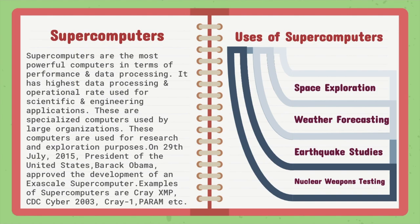Supercomputers have the highest data processing and operational rate, used for scientific and engineering applications. These are specialized computers used by large organizations for research and exploration purposes. On 29th July 2015, President of the United States Barack Obama approved the development of an exascale supercomputer. Examples include Cray XMP, CDC Cyber 2003, Cray 1, and PARAM. Supercomputers are used for space explorations, weather forecasting, earthquake studies, nuclear weapons testing, and many other advanced research applications.